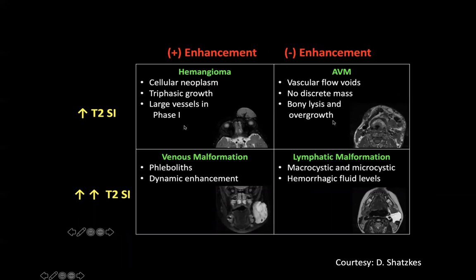From Deborah's slides: AVM does not have a mass but can give bony lysis and grows over time. Hemangioma is characterized by a large vessel in the early phases, while venous malformation has this dynamic enhancement with phlebolites. If you want to use T2, remember venous malformation has mixed components, can be micro- and macrocystic, and has fluid-fluid levels. When you see fluid-fluid levels, the only other differential diagnosis is the aneurysmal bone cyst.